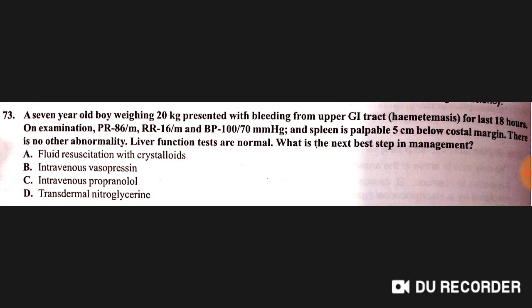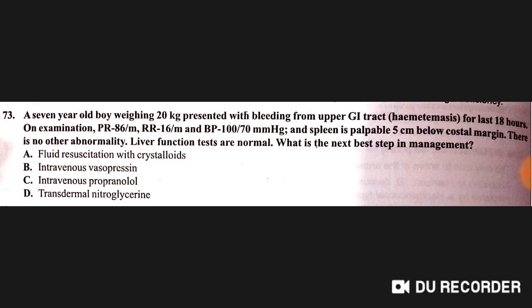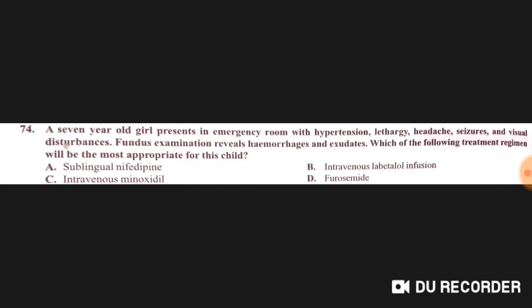A seven-year-old boy (20 kg) presents with upper GI bleeding (hematemesis) for 18 hours. Pulse 86, BP 100/70, spleen palpable 5 cm below costal margin, liver function tests normal. The best step in management is intravenous vasopressin.